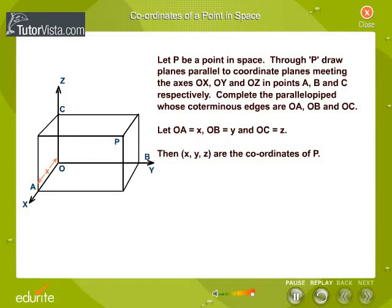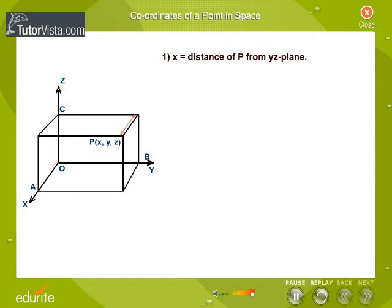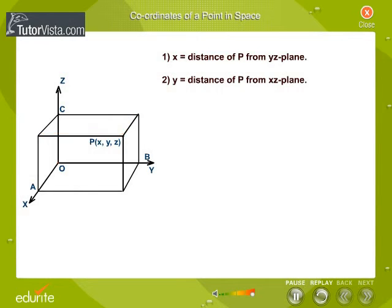Let OA equals x, OB equals y and OC equals z. Then x, y, z are the coordinates of P. x equals distance of P from YZ-plane, y equals distance of P from XZ-plane, z equals distance of P from XY-plane.